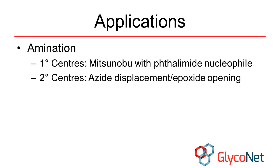For primary centers, a Mitsunobu reaction with phthalimide followed by deprotection is a commonly used protocol. At secondary centers, azides can be installed by displacing sulfonates or opening epoxides. The azide can then be easily reduced to an amine using any number of reducing agents.